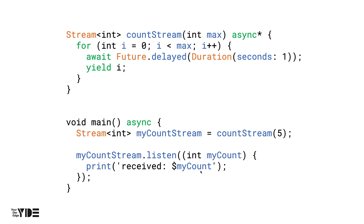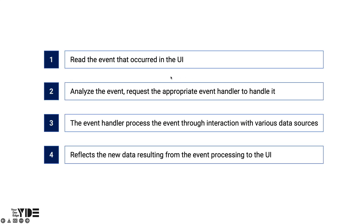Now that we have a quick look at what a stream looks like in Dart, let's look at some of the features that Blocs should have. First, it reads the event that occurred in the UI, analyzes the event, and requests the appropriate event handler to handle it. The event handler processes the event through interaction with various data sources, and the Bloc reflects the new data resulting from event processing to the UI. In other words, to use a Bloc, we need to define events and implement event handlers.